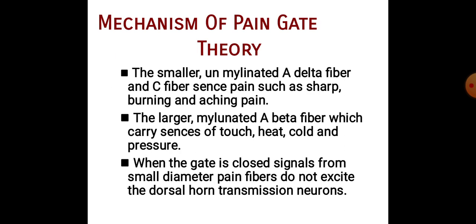Mechanism of Pain Gate Theory: Smaller unmyelinated A-delta fibers and C fibers carry pain such as sharp, burning, and itching pain. The large myelinated A-beta fibers carry sensations of touch, heat, cold, and pressure. When the gate is closed, signals from small diameter pain fibers do not exit the dorsal horn transmission neuron.